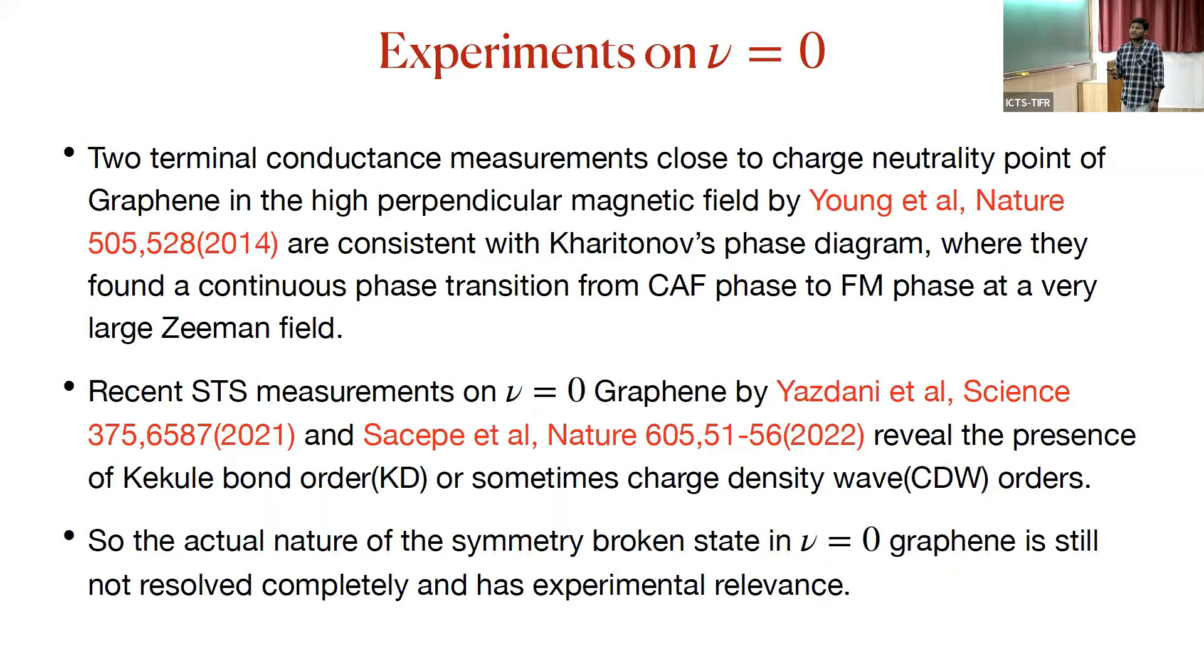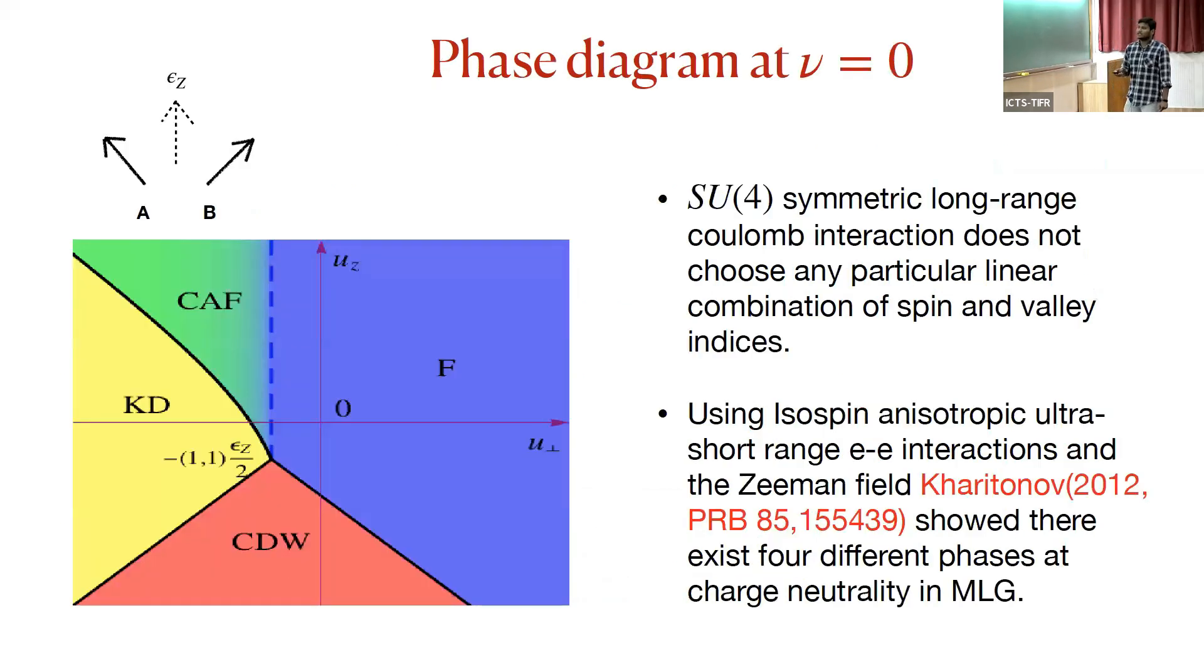After this work, there were experiments by Andrei Young group which looked at two-terminal conductance measurement close to the charge neutrality point in graphene. They found that it seems consistent with the Kharitonov phase diagram, where their conclusion was that they found a continuous phase transition from the canted phase to the ferromagnet phase. If you somehow at very low Zeeman field start at this point and increase the Zeeman field, this line will go like this and you will end up getting the canted phase to the ferromagnet phase. This is an explanation that seems to work in these settings.